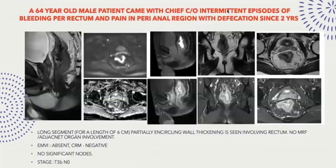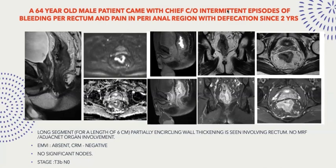Coming to the case discussions. A 64-year-old male patient presented with intermittent episodes of bleeding per rectum and pain in the perianal region with defecation since two years. MRI shows involvement of a long segment of approximately 6 cm encircling the wall. Thickening is seen involving the rectum. No mesorectal fascia or adjacent organ involvement is noted. The circumferential resection margin is negative. There is no evidence of extramural vascular invasion and no significant nodes. It is staged as T3B N0.